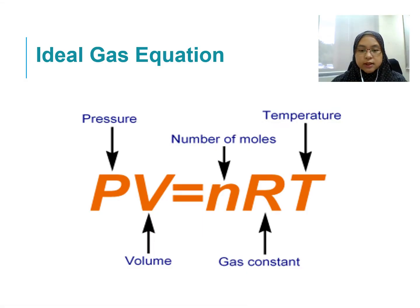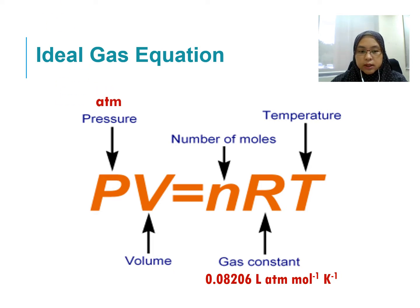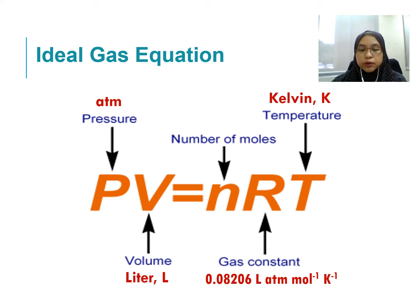For this chapter, it is advisable to use the value of gas constant R as 0.08206 litre atm per mol per kelvin. P is the pressure in atm, V is the volume in litre or dm³, n is the number of mol, and temperature is in kelvin. Remember to do unit conversion before you start using PV equals to nRT in your calculation.